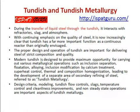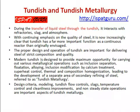The proper design and operation of tundish are important for delivering steel of strict composition and quality. Modern tundishes are designed to provide much more opportunity for carrying out various metallurgical operations such as inclusion separation, flotation, alloying, inclusion modification, calcium treatment, superheat control, and thermal and composition homogenization — leading to the development of a separate area of steelmaking refining referred to as tundish metallurgy. Design, physical modeling, tundish flow controls, temperature control, cleanliness improvements, and non-steady-state operations are important aspects of tundish metallurgy.